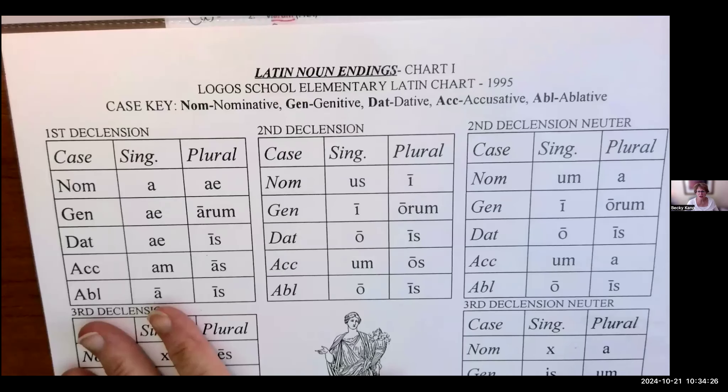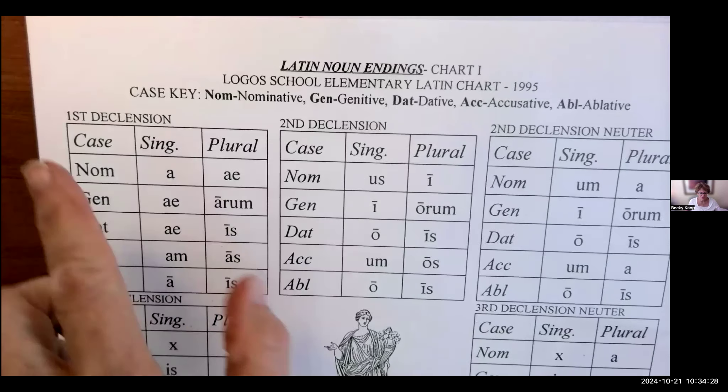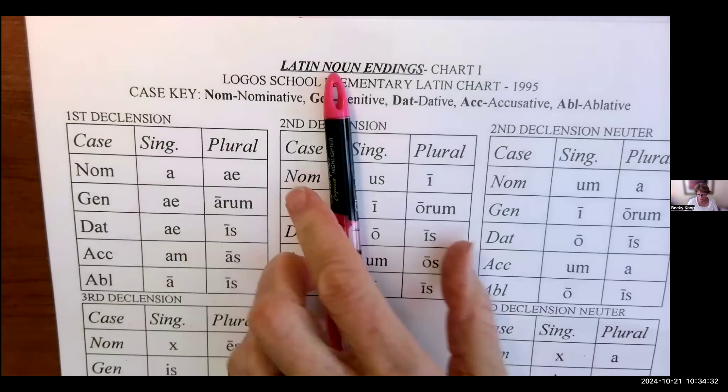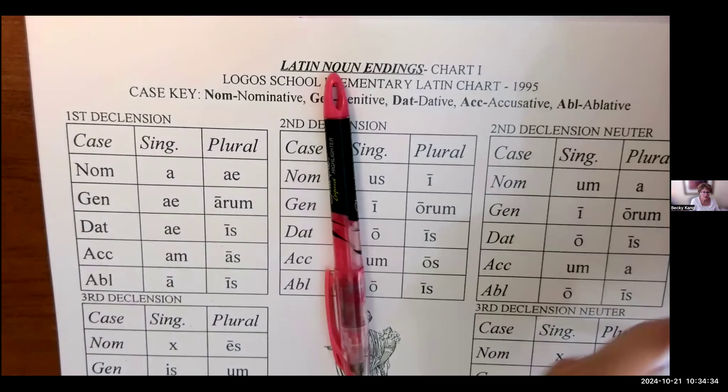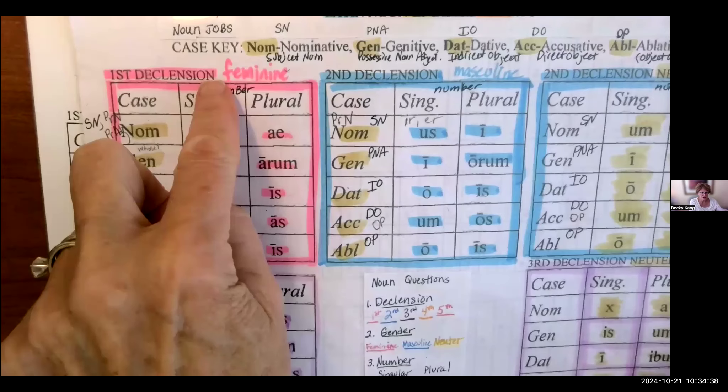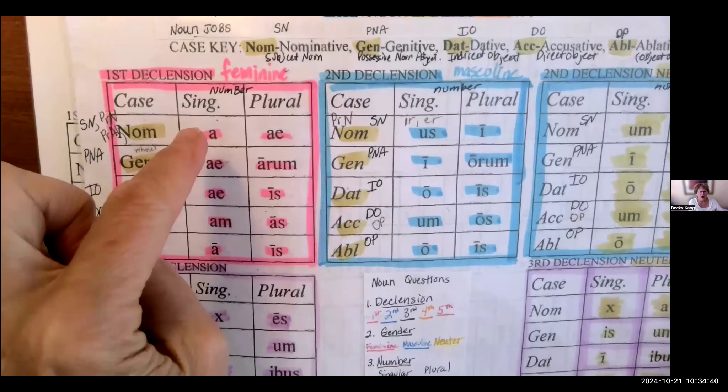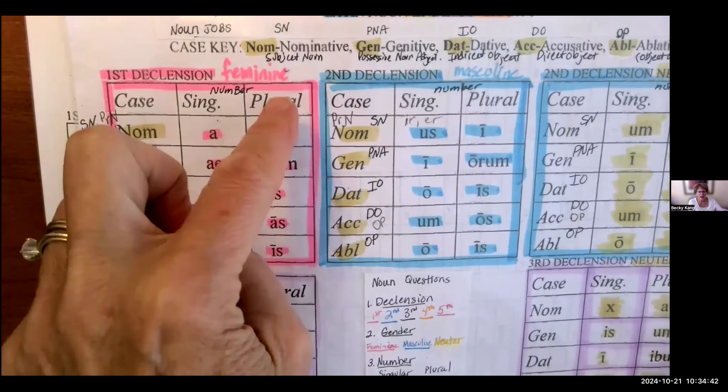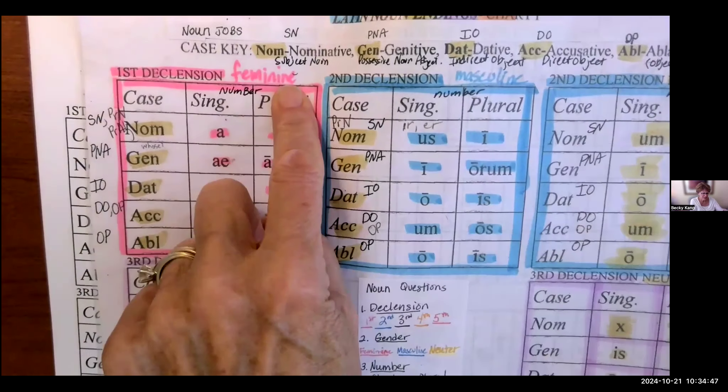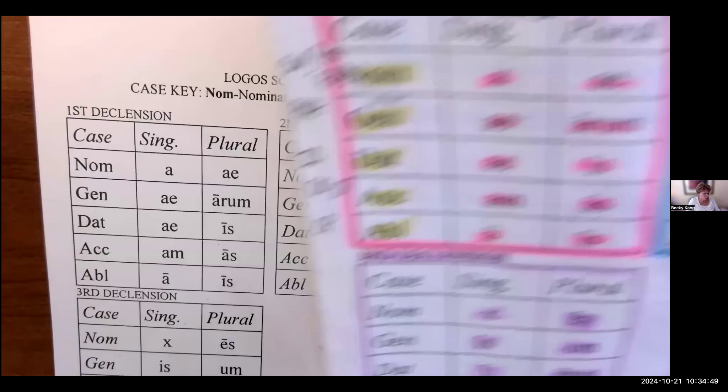It is your Latin noun ending sheet, this first declension. I want you to go ahead and get a pink highlighter, and I want you to highlight the outside of it, the first declension, and then the endings: a, ai, am, a, ai, arum, is, as, is. I want you to write the word feminine in it, and you can write it in pink if you want.